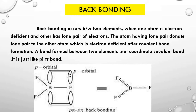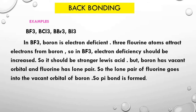This is a delocalized pi bond that may occur between boron and any of the three fluorine atoms. This is not a coordinate covalent bond — here, parallel overlap takes place between two p-orbitals. Back bonding of this type takes place in BF₃, BCl₃, BBr₃, and BI₃, where boron is the electron deficient element and fluorine, chlorine, bromine, or iodine provide the lone pairs.